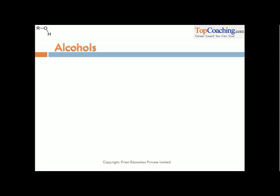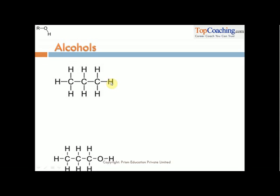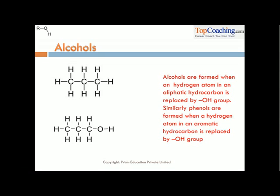If I replace one hydrogen from that hydrocarbon — for example I take propane — and replace this hydrogen with an OH group, I get the same hydrocarbon with H replaced by an OH group. This new compound formed has altogether different properties and applications, and we call these compounds alcohols. So alcohols are formed when a hydrogen atom in an aliphatic hydrocarbon is replaced by an OH group.